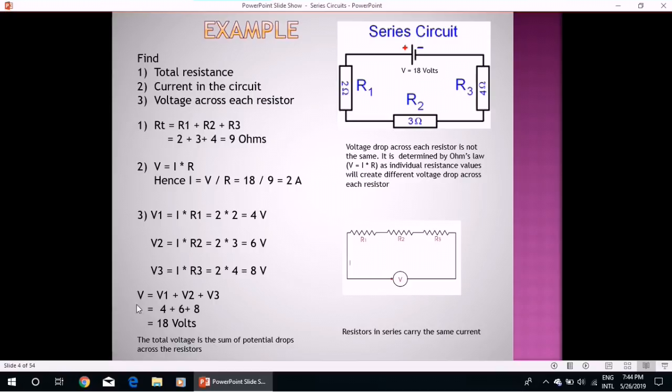So it can be seen that the total voltage will be equal to the sum of voltages across each resistor. And total comes out to be 4 plus 6 plus 8 equal to 18 volts, which is the same as the applied potential difference. So the total voltage is the sum of potential drop across the resistors.